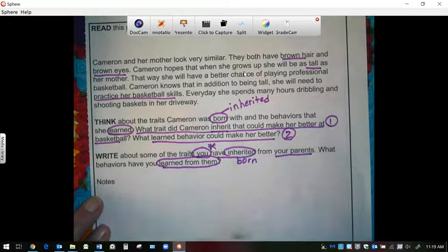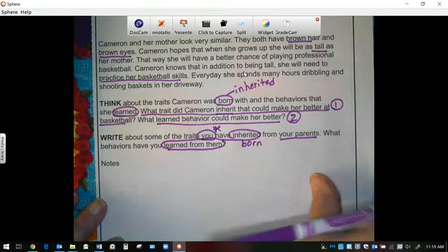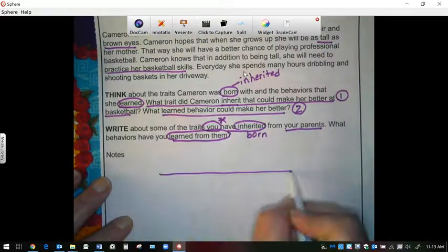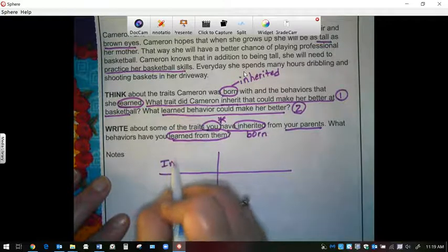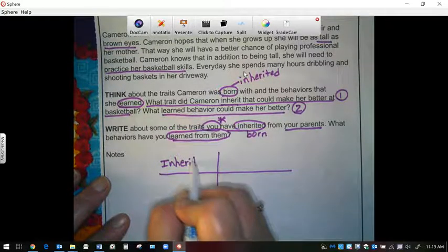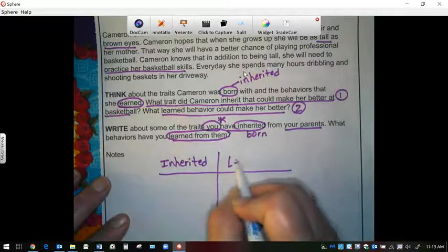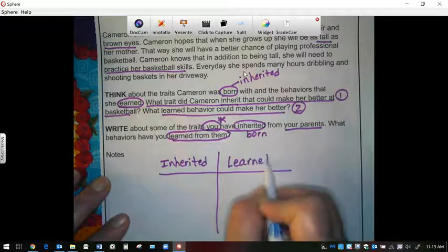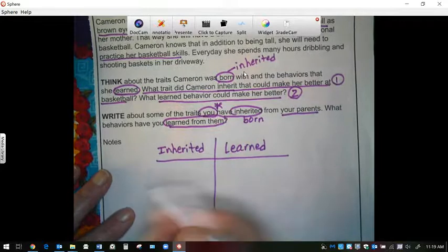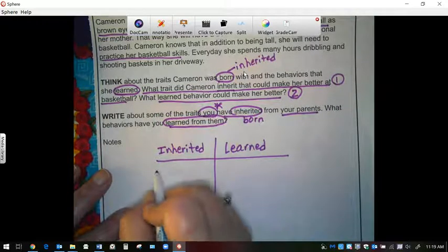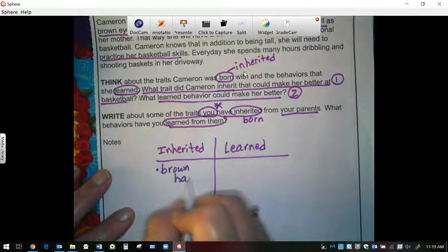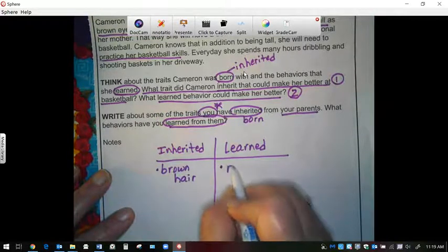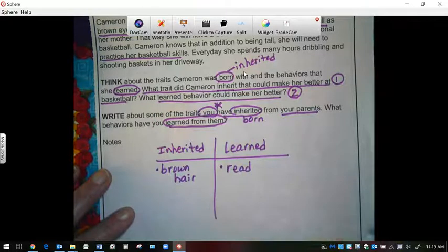Okay, your notes. You could write a t-chart and you're going to put inherited and learned. One example, and we learned it in our Stemscopedia, your brown hair, and maybe you learned how to read from your parents with the help of your parents.